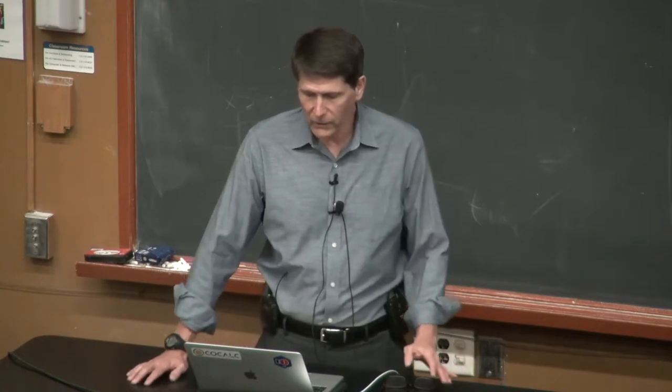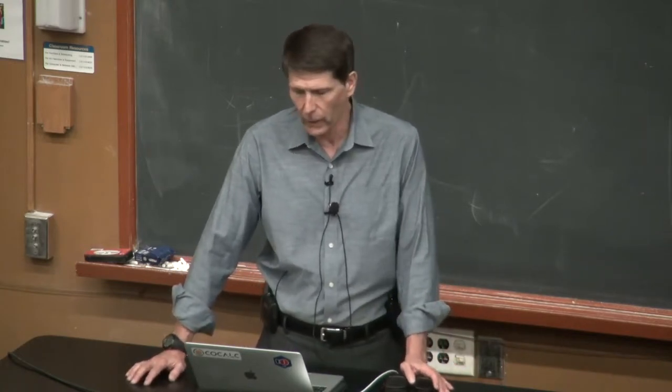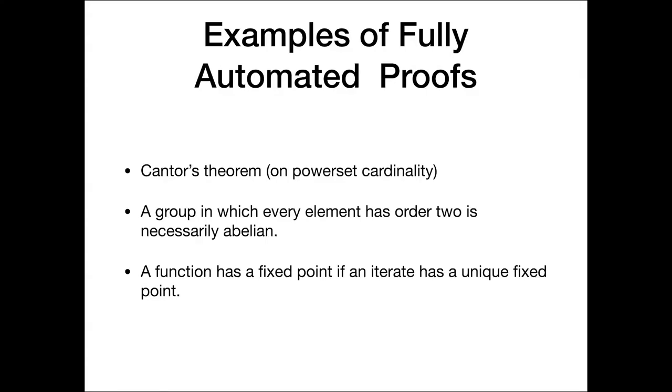So if we look at other examples of fully automated proofs, an example would be something like Cantor's theorem on cardinality of power sets, a group in which every element has order two is necessarily abelian. This is sort of a first-year homework problem for students in abstract algebra. So if an iterator or a function has a fixed point, if an iterator has a unique fixed point. So one thing that these problems have in common is that they have a fairly short proof certificate that might not be easy to find, but once you find the certificate, they admit fairly short proofs.